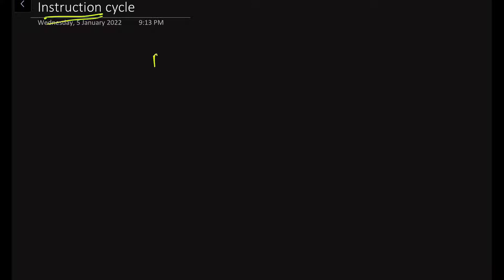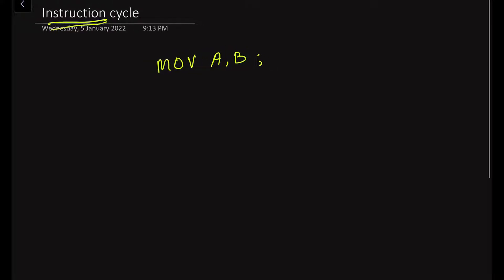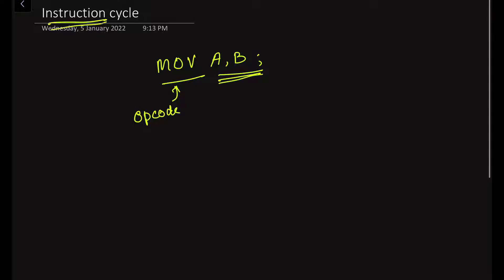First of all, let us understand what is an instruction. An instruction is a command that is given to the microprocessor to perform some specified operation. For example, consider the instruction MOV A, B. Here, MOVE is the opcode — we have already learned about opcodes in our previous videos — and A, B are the operands.